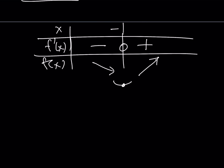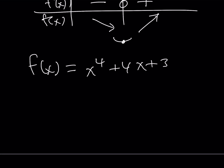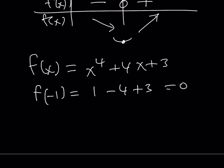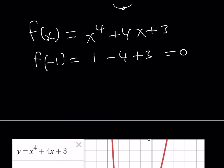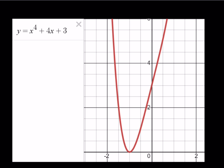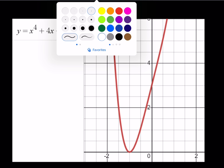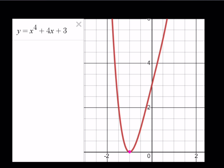What happens if our function has a minimum at x equals negative one? Let's find the minimum value: substituting negative one gives one minus four plus three, which equals zero. So we have a function with a minimum at negative one and a minimum value of zero. That means the graph shows the function touching the x-axis at x equals negative one and staying above it everywhere else. Therefore f of x equals x to the fourth power plus 4x plus 3 cannot be negative. This brings us to the end of the second method.